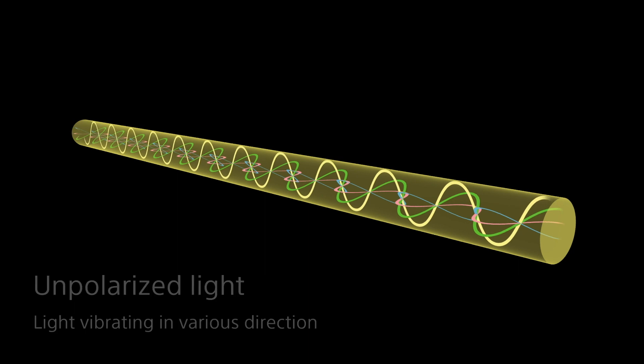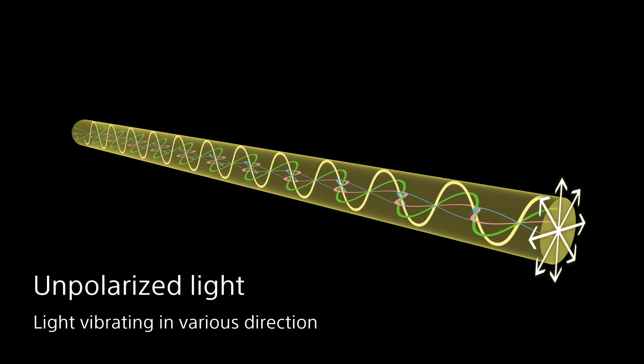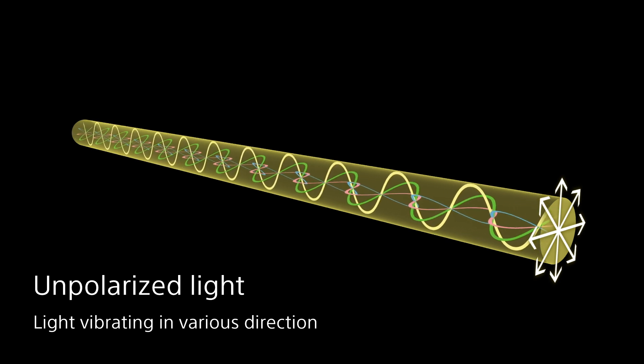For example, light from the sun or a fluorescent lamp vibrates in various directions. These types of lights are called unpolarised light.